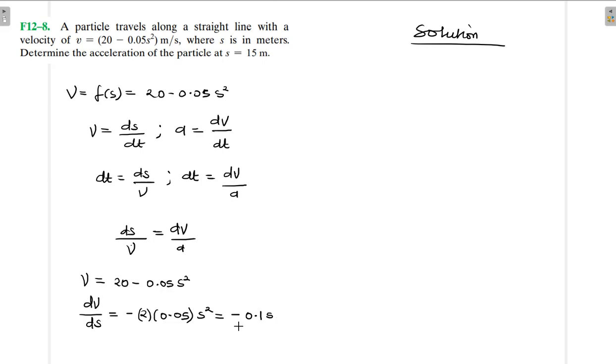The s squared has gone to just s because it's supposed to be 2 minus 1, right? Sorry about that. So our dv/ds is equal to -0.1s.